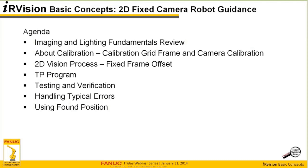Our agenda for today will be to go over imaging and lighting fundamentals and an overview of the process. I'll talk about calibration — the calibration grid frame and camera calibration — and then the teaching and configuration of the 2D vision process for fixed frame offsets. We'll go into how to program a PIC program on the teach pendant using the vision information, test and verify that it works correctly, and briefly handle typical errors. To conclude, we'll touch upon how to use the found position, which is a variation on getting information out of the 2D vision offset process.